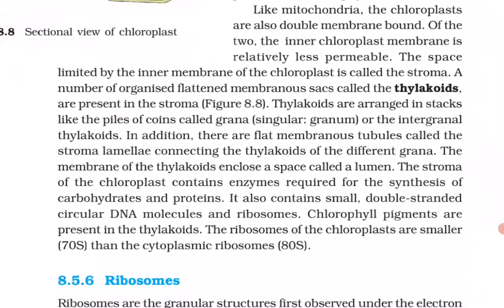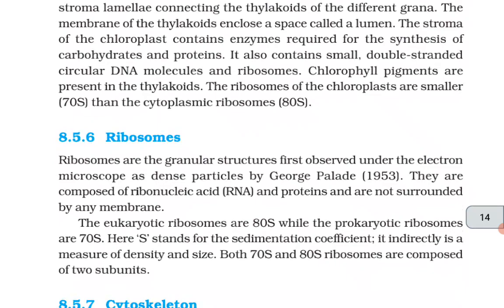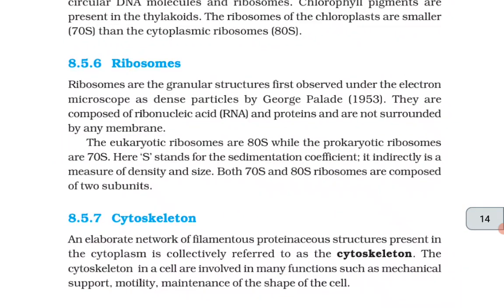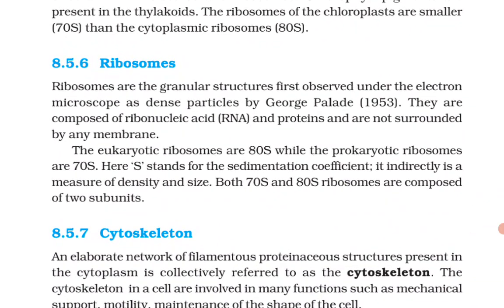The membrane of the thylakoids encloses a space called a lumen. The stroma of the chloroplast contains enzymes required for synthesis of carbohydrates and proteins. It also contains small double-stranded circular DNA molecules and ribosomes. Chlorophyll pigments are present in the thylakoids. The ribosomes of the chloroplast are smaller (70S) than the cytoplasmic ribosomes (80S).